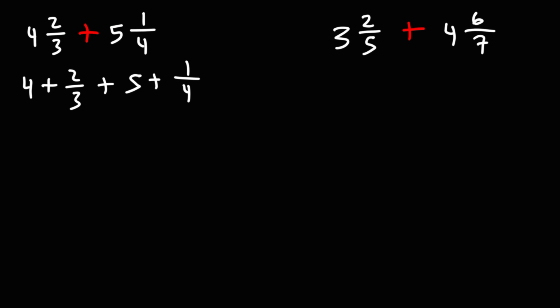So the first thing we could do is add the whole numbers. 5 plus 4 is 9. Next, we can add the fractions 2 over 3 plus 1 over 4. To add them, we need to get common denominators.